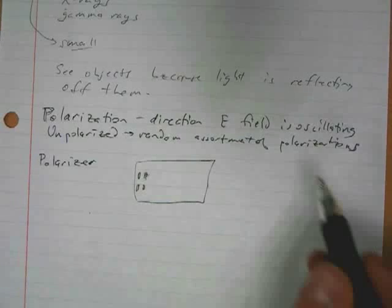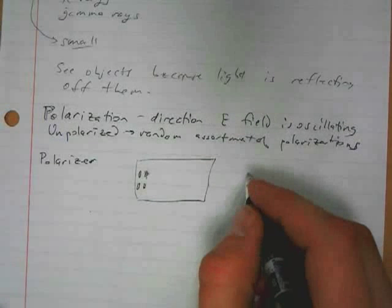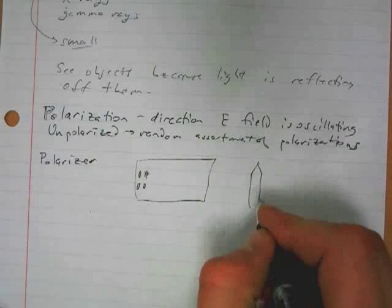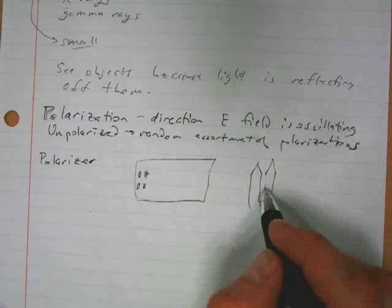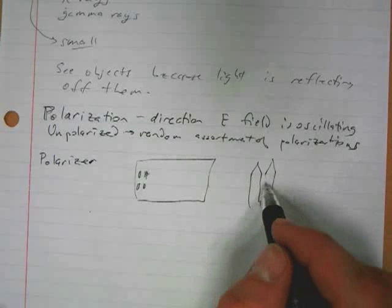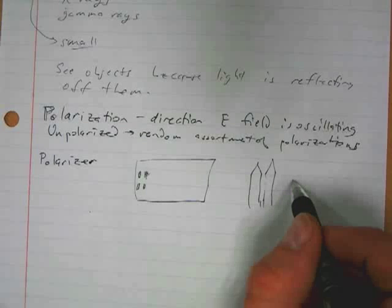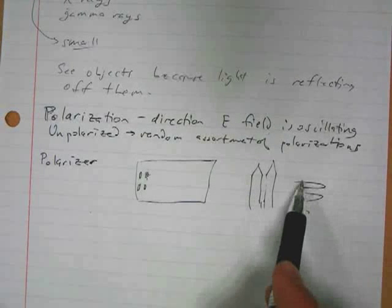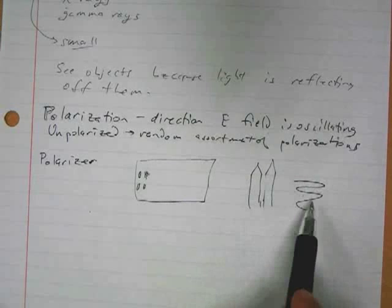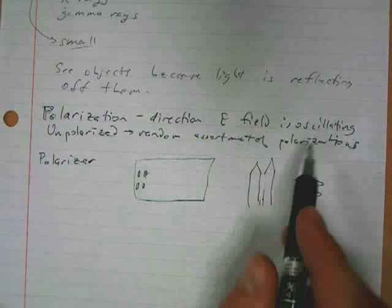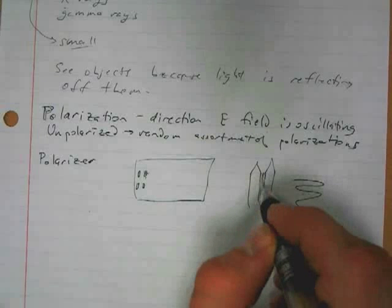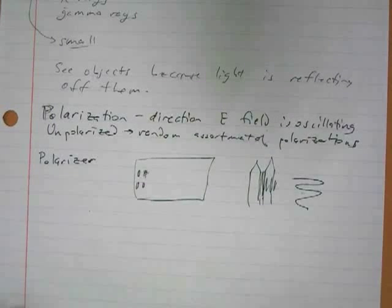As an analogy, consider a picket fence oriented this way. If you have a rope oscillating horizontally, it won't fit through the picket fence. But if it's oscillating up and down, that'll go through the fence just fine. So that's an analogy, though it doesn't quite correspond to the physical reality.